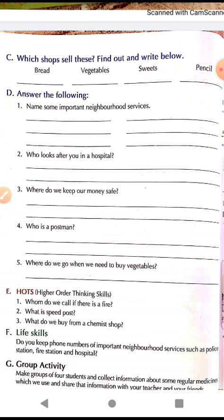If you wish to buy fresh vegetables, we go to a greengrocer. For daily needs like bread, egg, butter, soap, milk, or other grocery items, we go to a grocer's shop. For fruits, we go to a fruit seller. For medicine, we go to a chemist shop. For flowers, we go to a florist. For cakes, pastries, biscuits, and toffees, we go to a confectionery.